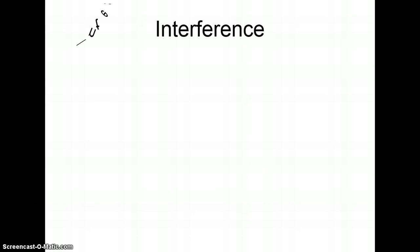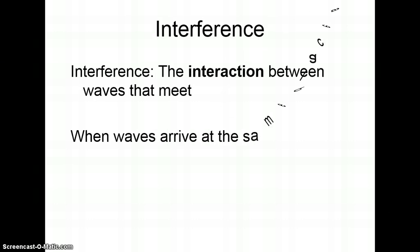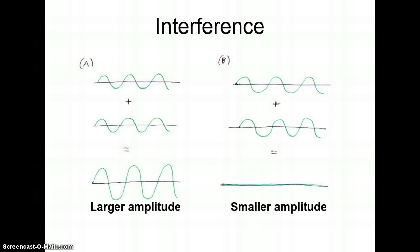Interference is the interaction between waves that meet. When waves arrive at the same place at the same time, interference occurs. Example A: you can see two waves meet and they're causing a bigger wave with a larger amplitude. That'll be constructive. Example B: two waves meet and they cancel each other out and there's essentially no amplitude. So there we have constructive and destructive interference.